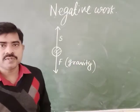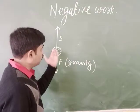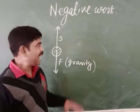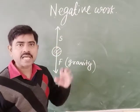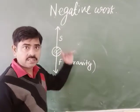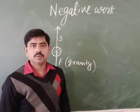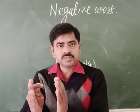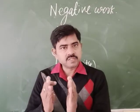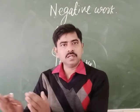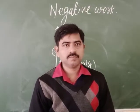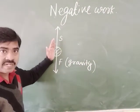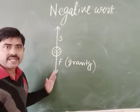So what is the situation here? The object is moving up. The displacement of the object is in the upward direction, and constantly earth is acting gravitational force on this object in the downward direction. In the case of positive work, the object moves in the direction of the applied force — the displacement's direction and the direction of force are the same. But here, the direction of displacement and direction of force are exactly opposite to each other.